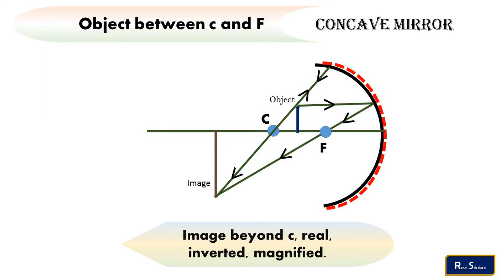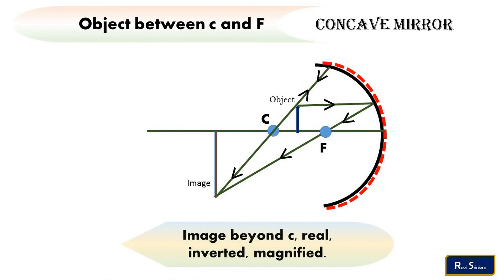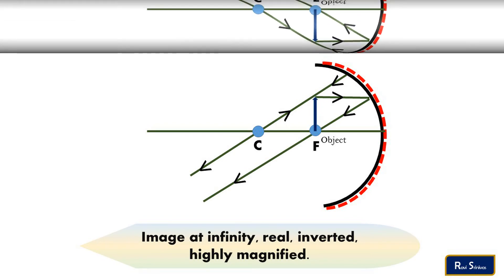The object is now between the focus and center of curvature, as we can see in the diagram. The light ray coming from the center of curvature will go back along the same path. Both reflected rays meet at a point beyond the center of curvature, so the image is beyond the center of curvature. A real, inverted, and enlarged image is formed in this case.